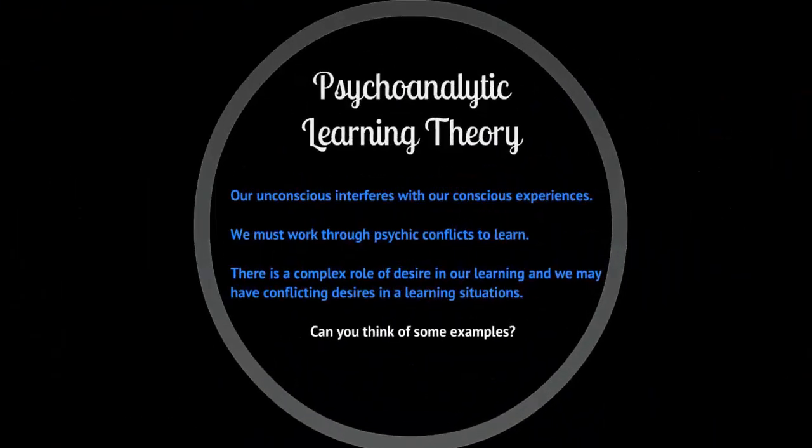Psychoanalytic theory talks about our unconscious interfering with our conscious experiences. For example, if you had a bad experience with digital environments and learning, you might be nervous about this course and need to work through that psychic conflict to be open to learning. There's a complex role of desire in our learning — we might have conflicting desires. Examples include changing a habit, recovering from an addiction, or behavior change programs like weight loss or quitting smoking, which look back at our unconscious desires.